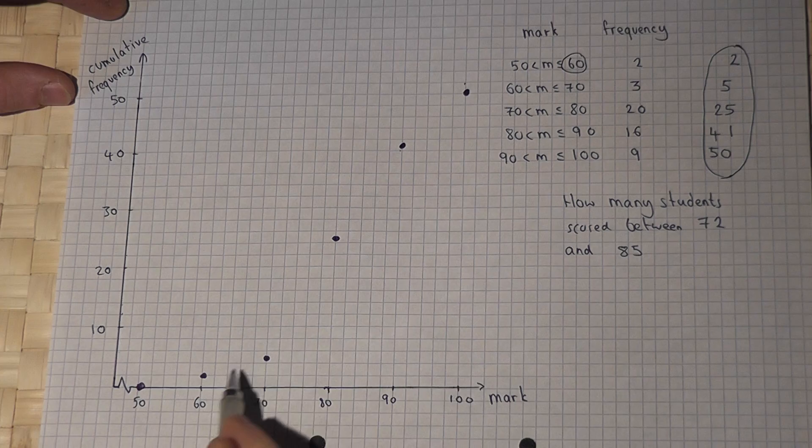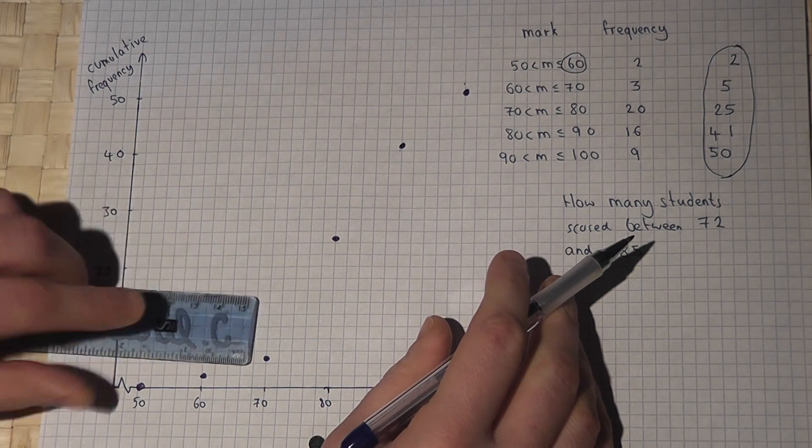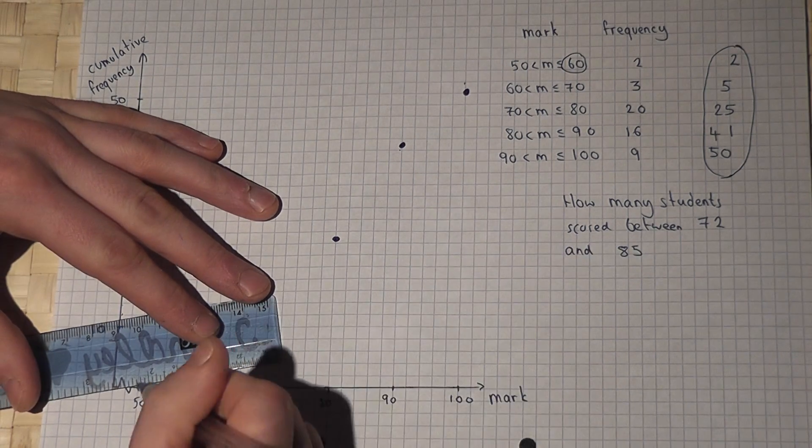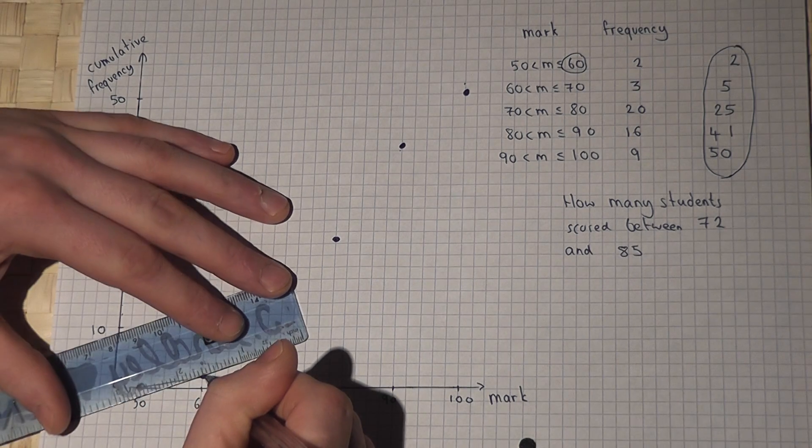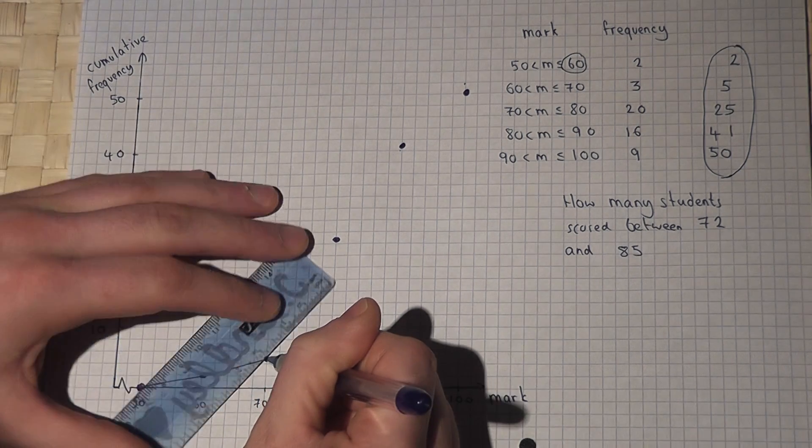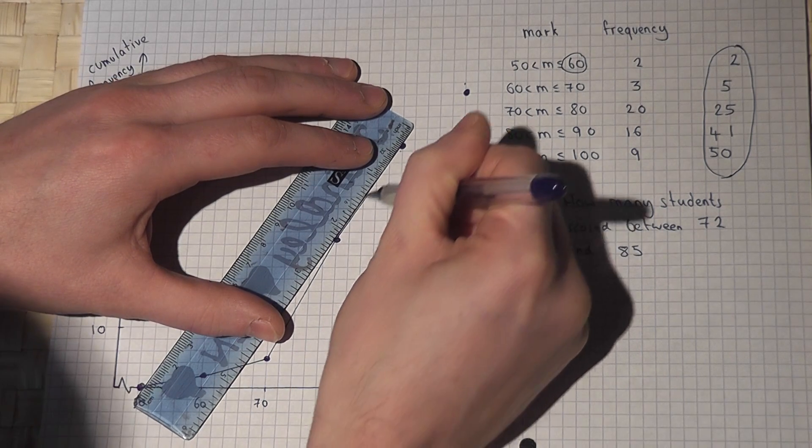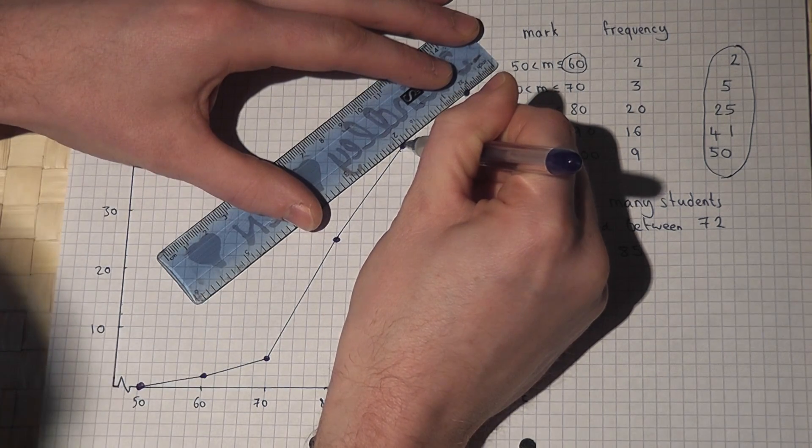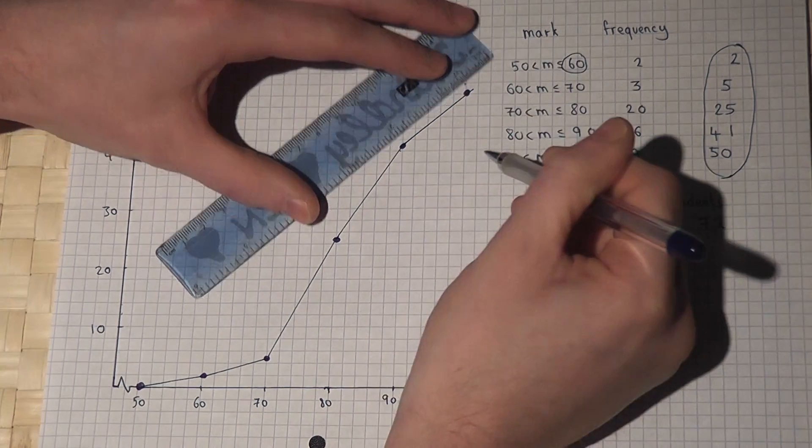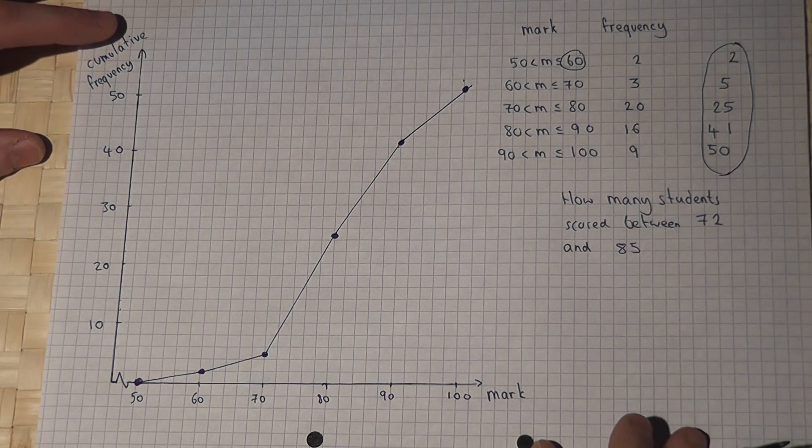So there are my dots for the graph. I then join these with a straight line between each of the pairs of dots. Like so. In the exam of course you'd use pencil. I'm using ink to make the graph clearer for the video. So there we go. We've drawn the graph.